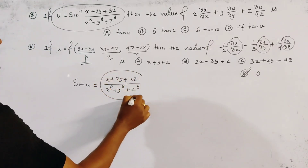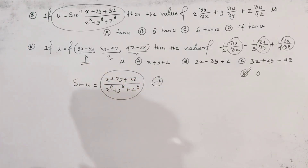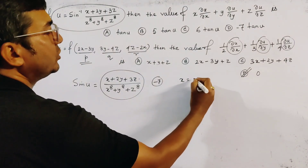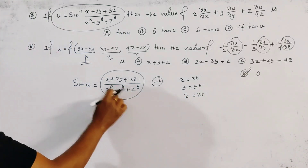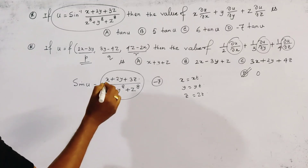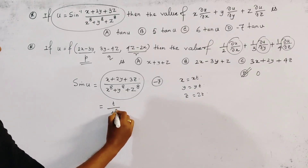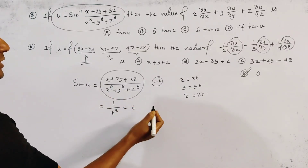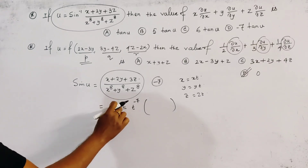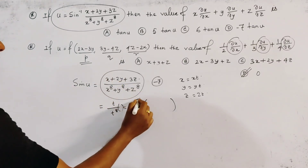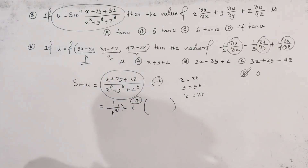Clearly sin(u) is a homogeneous function of degree minus 7. How do we find this degree? If we put x = xt, y = yt, z = zt in this expression, we can take t in common from the numerator and t⁸ from the denominator, giving t^(−7) times the original expression. So the degree n = −7.